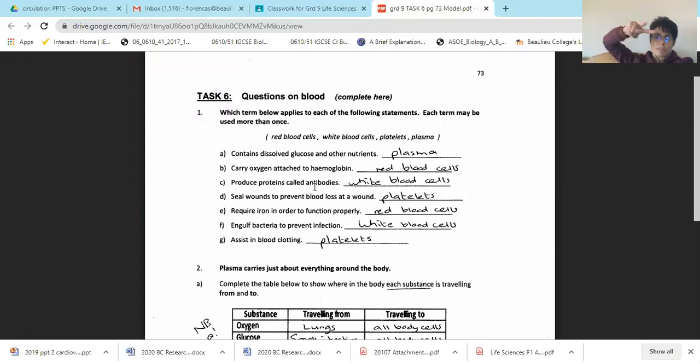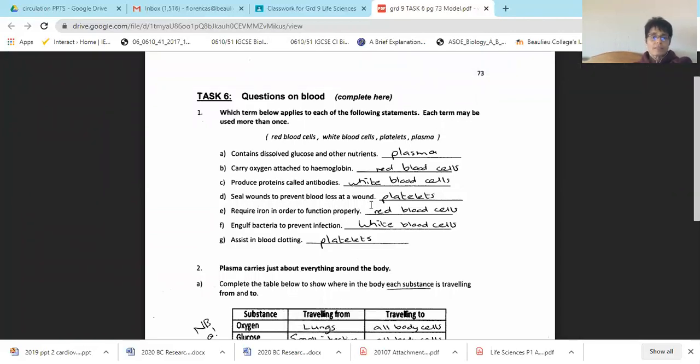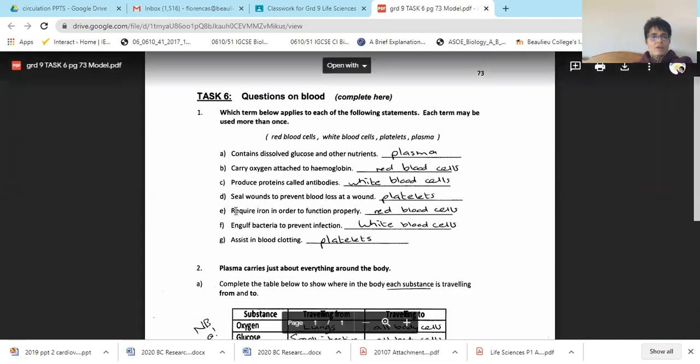So it's your red blood cell. Which part produces proteins called antibodies? The white blood cell makes those little Y-shaped antibodies, which latch onto the germ and stop it from getting into your cells and making you ill. Which seal wounds to prevent blood loss at a wound? The platelets. Now these have actually got fancy names. So red blood cells are actually called erythrocytes. White blood cells are leukocytes. And platelets are thrombocytes. Don't worry. I'm not going to ask you that.